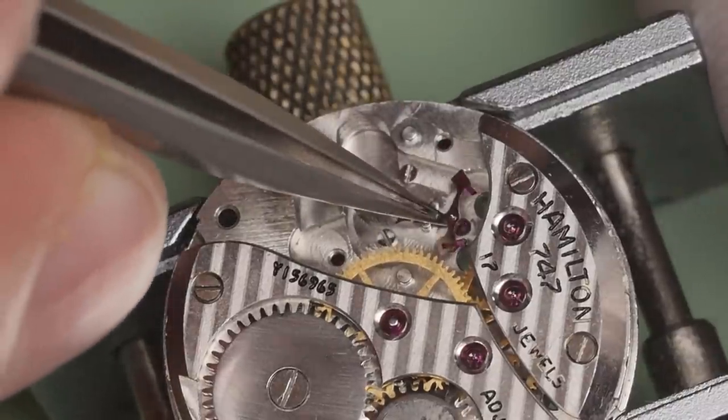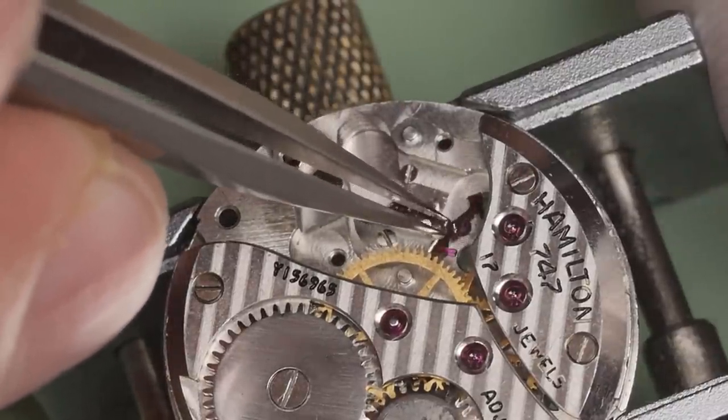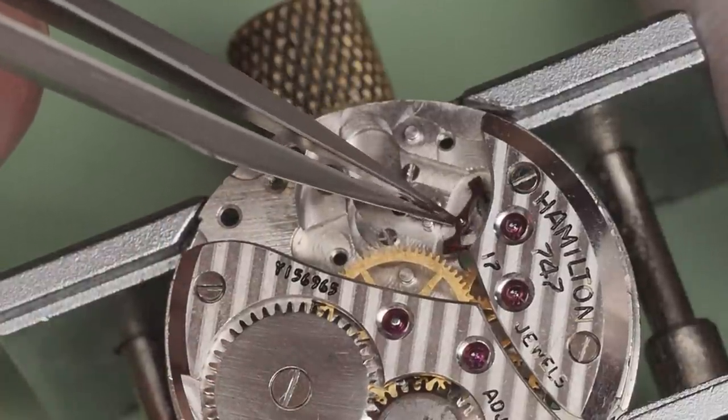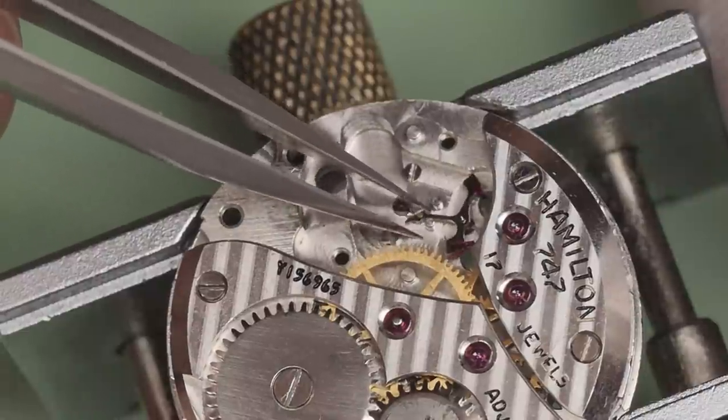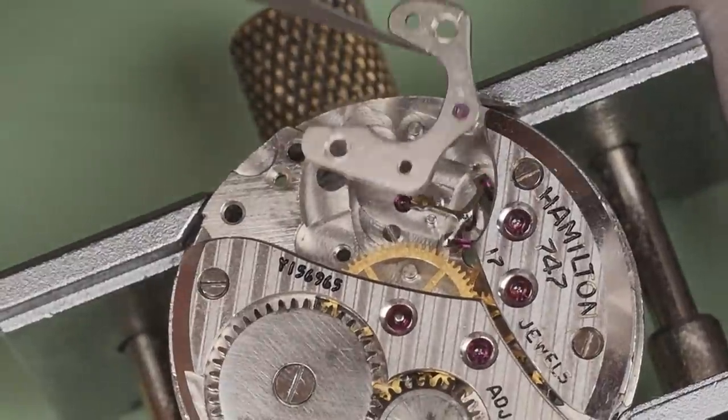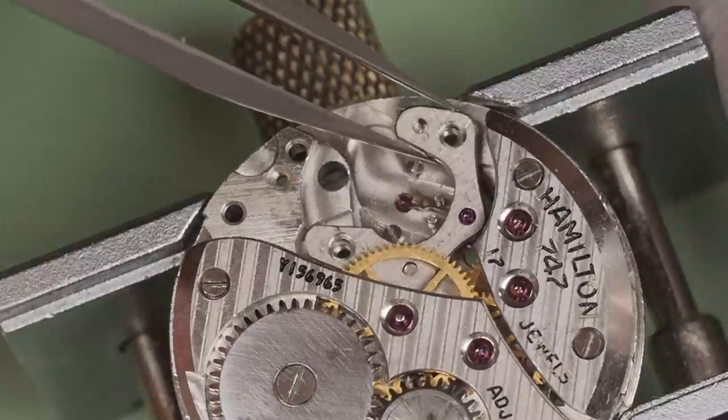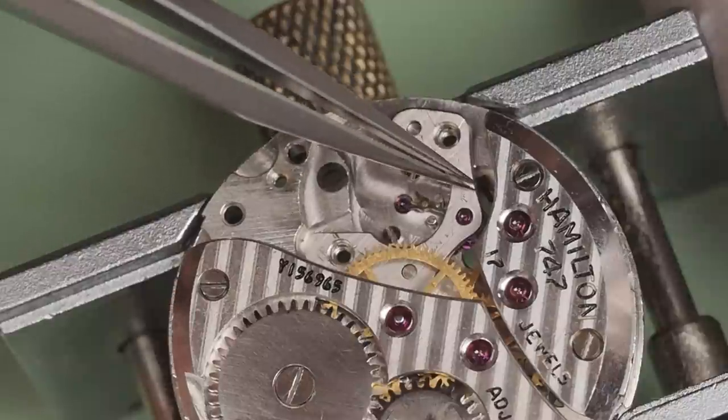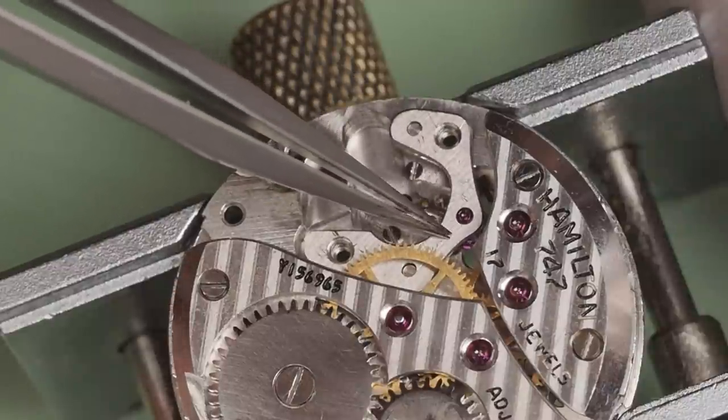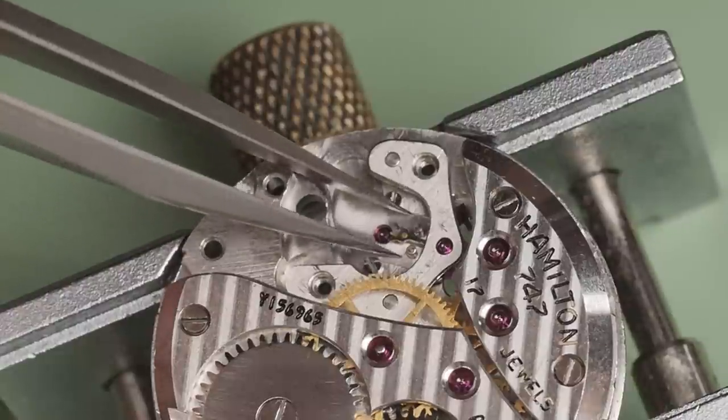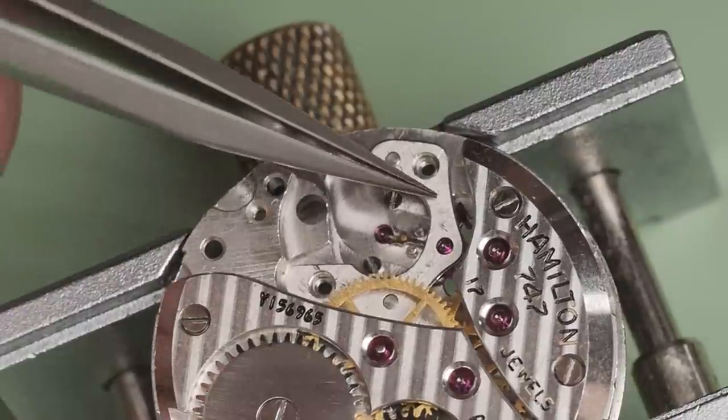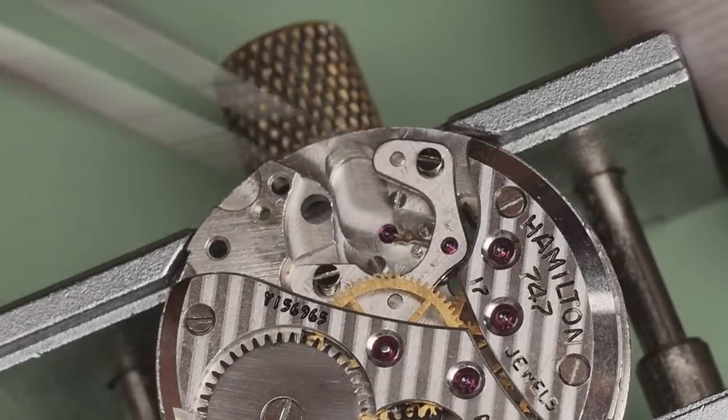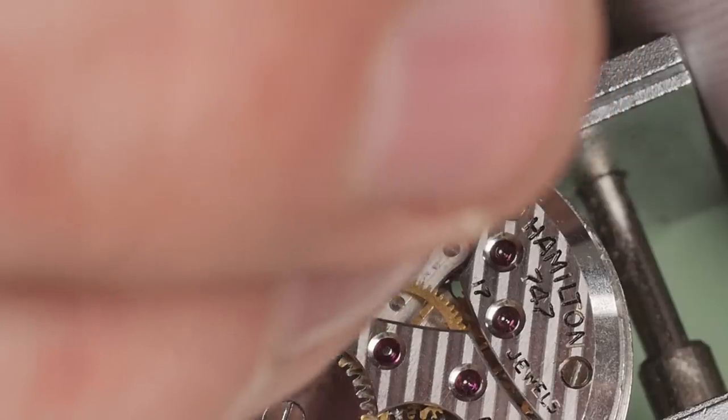To install the pallet fork, I'll line up the lower pivot with its hole and make sure that the pallet arm is between the two banking pins. I also need to be mindful that the pallet stones are on the same plane as the teeth of the escape wheel. It's pretty easy to have one of the pallet stones on top or below the teeth which will prevent the pivot from seating into its hole. Now I can work on getting the pallet bridge installed. There are two screw holes as well as two alignment pins. Of course the pivot hole needs to line up with the pallet pivot as well. With all these points of contact, the pallet bridge can sometimes rock around a bit and not seat itself correctly. Again, just taking my time and making minor adjustments here and there, I get the pallet bridge fitted where it belongs.